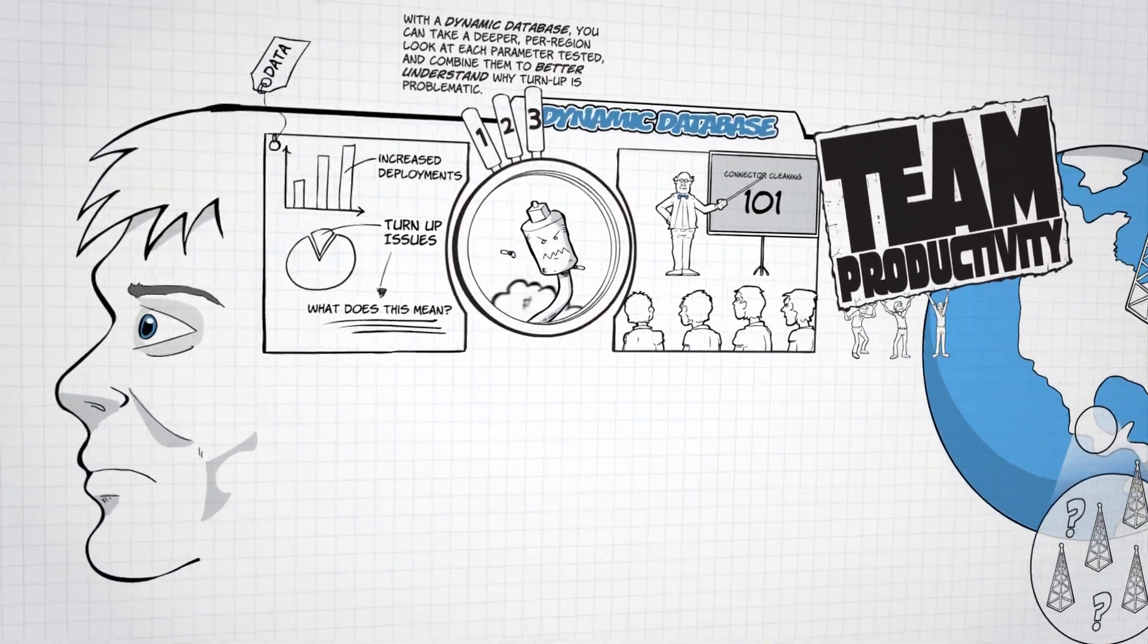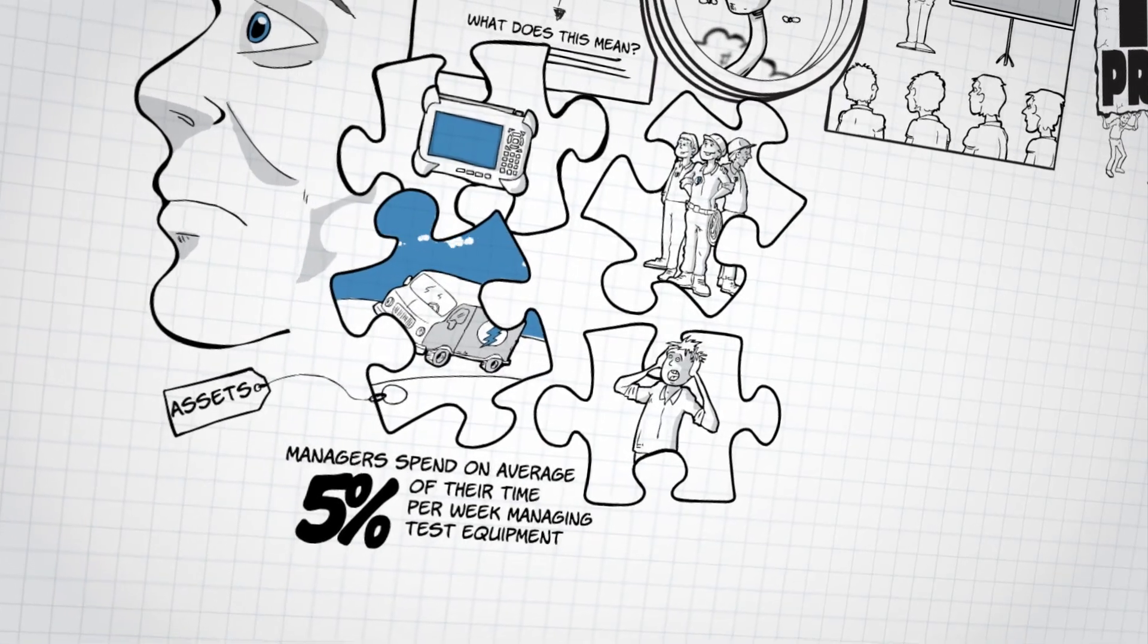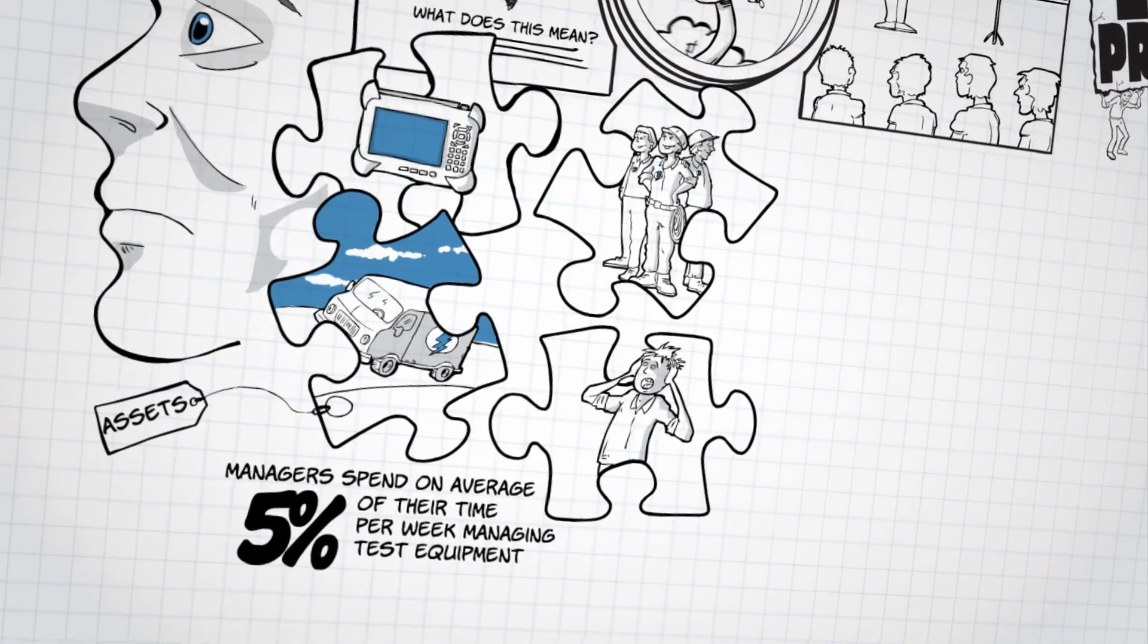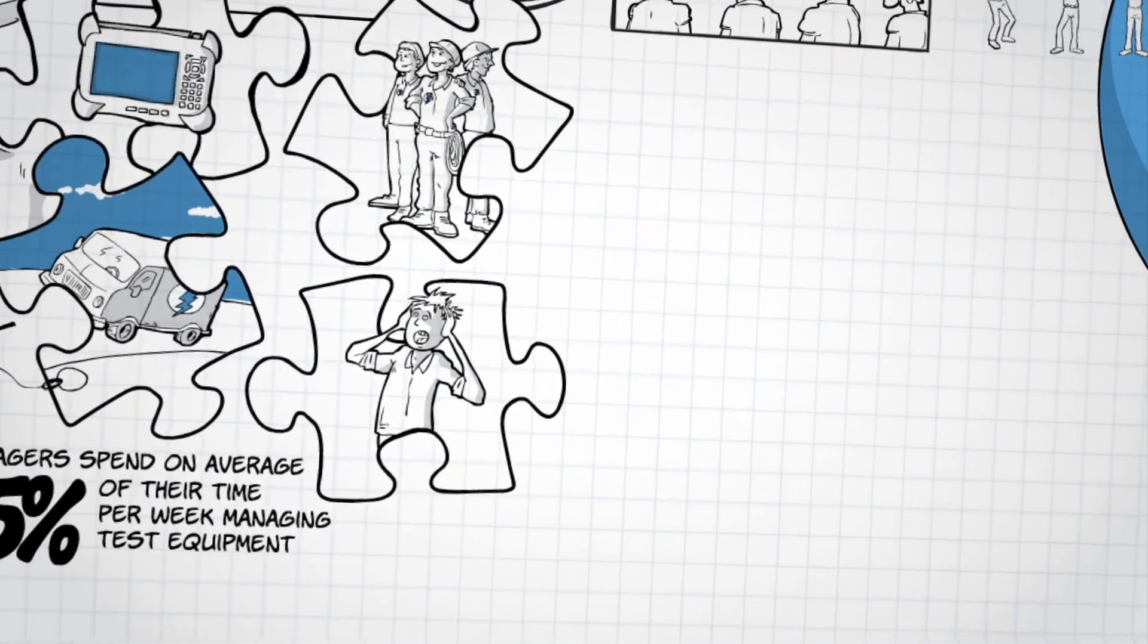Here's another example. Team managers spend on average 5% of their time per week managing test equipment. That's hundreds of hours per year spent on things that could be done automatically.